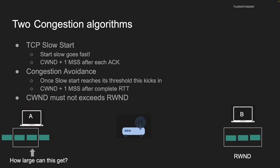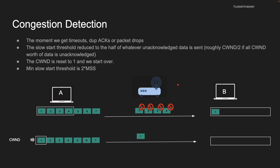A complete round trip in TCP means acknowledging and receiving the entire window. For example, if your congestion window is four packets, a round trip is when you receive acknowledgements for all four packets — only then do you get one additional MSS added to the congestion window. So it's more conservative and adds slower. Obviously, the congestion window must not exceed the receiver window, otherwise flow control becomes useless.